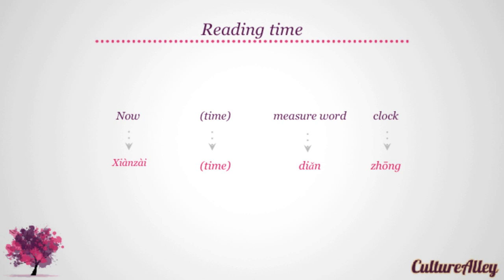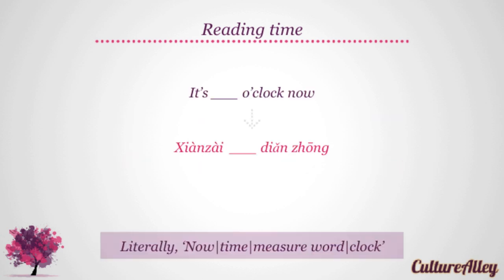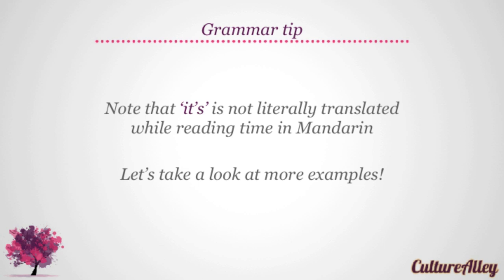The word-by-word translation is: now = xiàn zài, then the time told in Mandarin, measure word = dien, and clock = zhōng. Thus, 'it's o'clock now' will become xiàn zài [number] dien zhōng, literally meaning 'now time measure word clock'. Note that 'it's' is not actually translated while reading time in Mandarin, as the word 'now' takes its place.